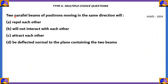Two parallel beams of positrons moving in the same direction. Will A: repel each other, B: will not interact with each other, C: attract each other, or D: be deflected normal to the plane containing the two beams?